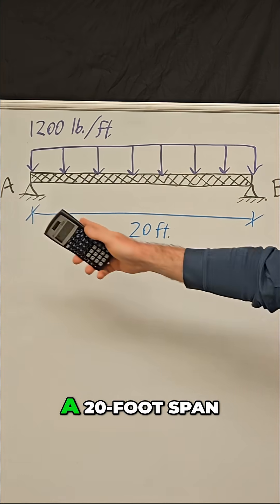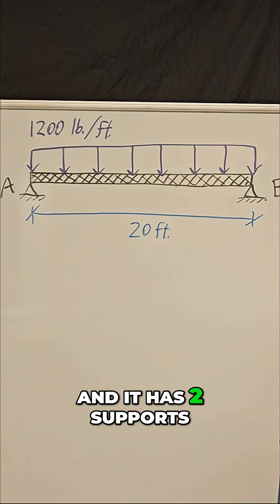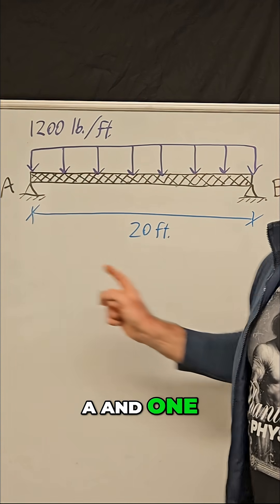Okay, so we have a beam that has a 20-foot span, and it has two supports, one at point A and one at point B.